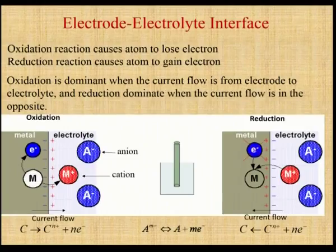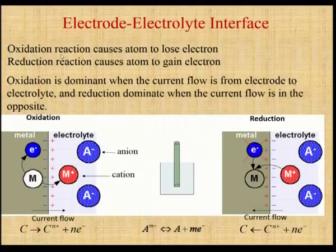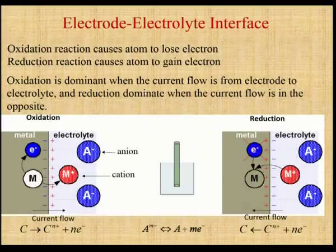Now, what is the basic about the electrode and electrolyte interface? The electrolyte is the solution where the electrode is placed. In this process, we have two basic cases: oxidation reaction and reduction reaction. Oxidation is caused by the attempt to lose electrons, and reduction is caused by the attempt to gain electrons. In the oxidation reaction, the current flows from electrode to electrolyte, whereas in the reduction reaction, the current flows from electrolyte to electrode.